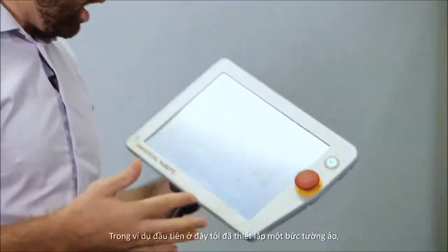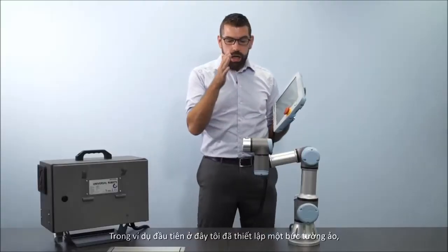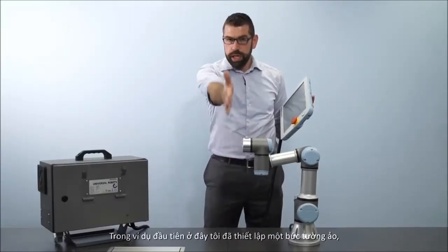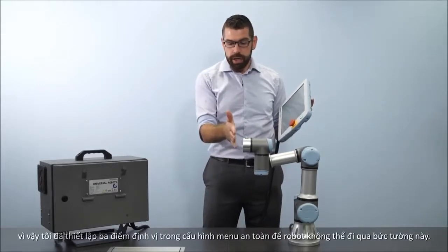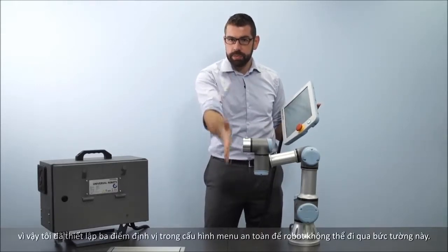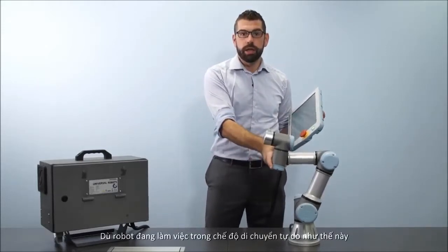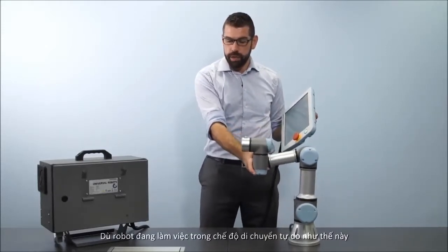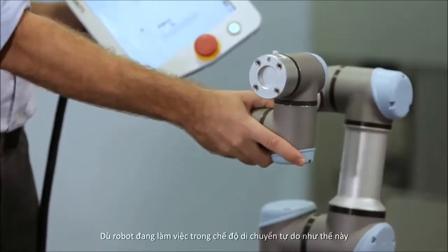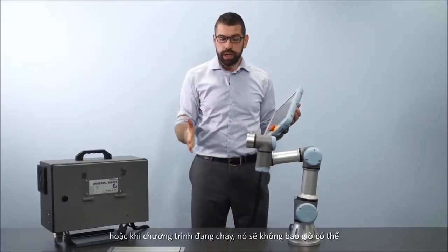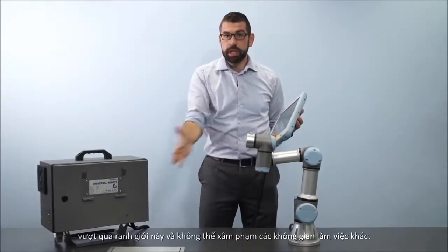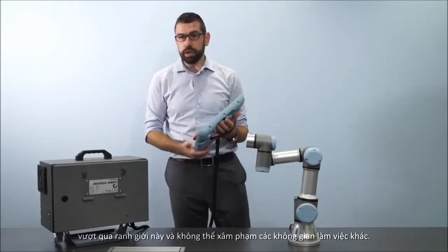In the first example here, I have set up a virtual wall—a hard limit boundary. I've taught three points to set up a plane and configured it in the safety menu so the robot tool cannot pass through this wall. Whether the robot is working in free drive mode like this or when the program is running, it will never be able to pass this boundary into this area of the workspace.